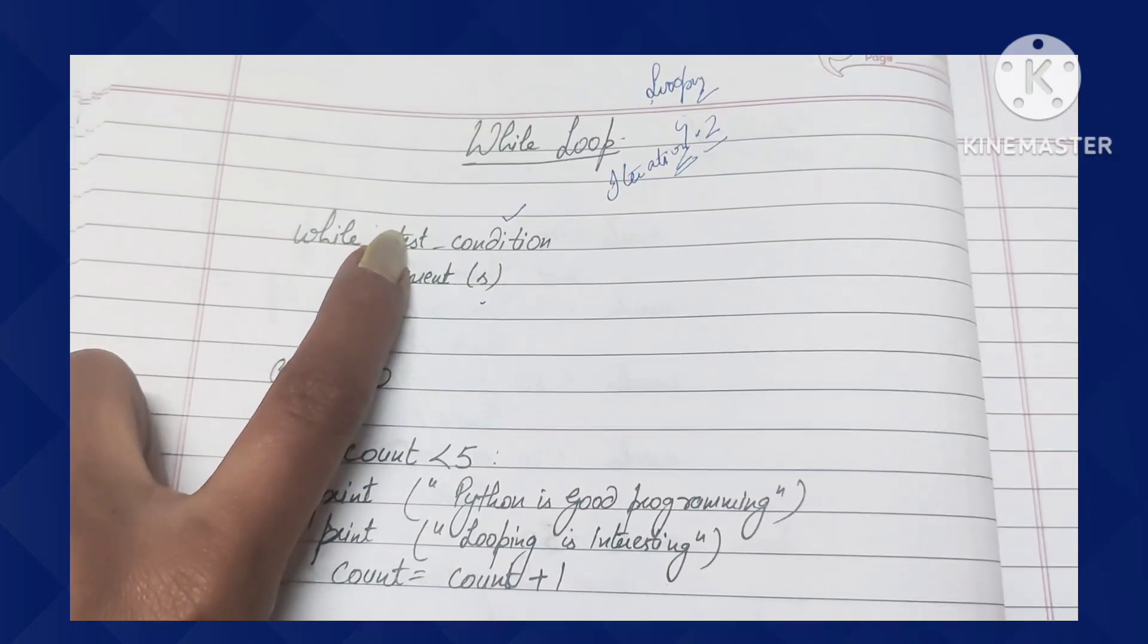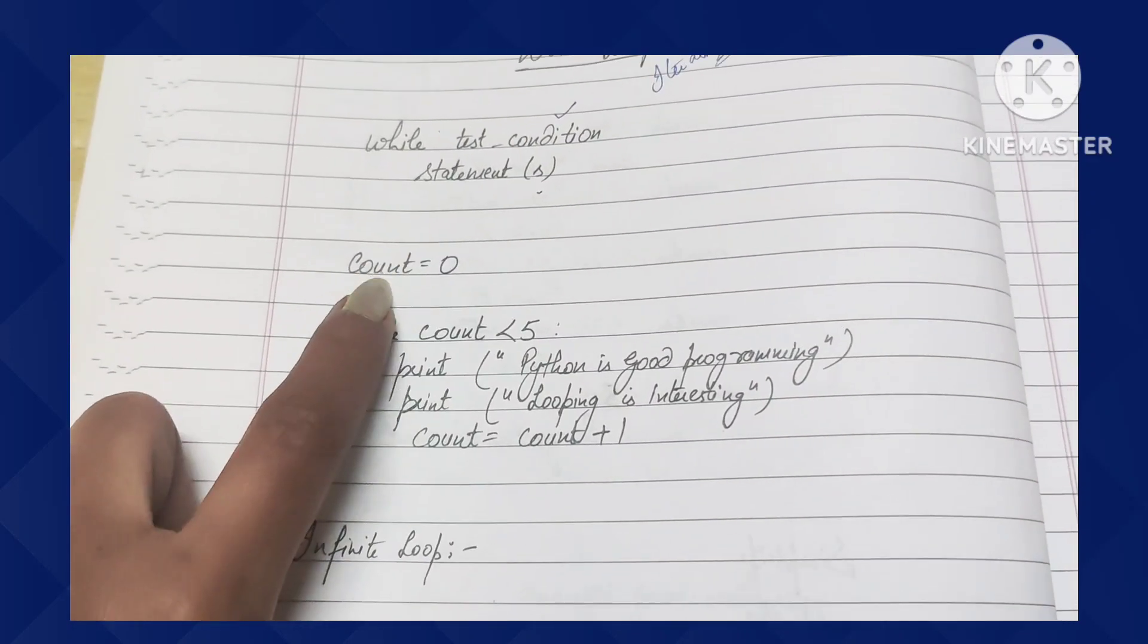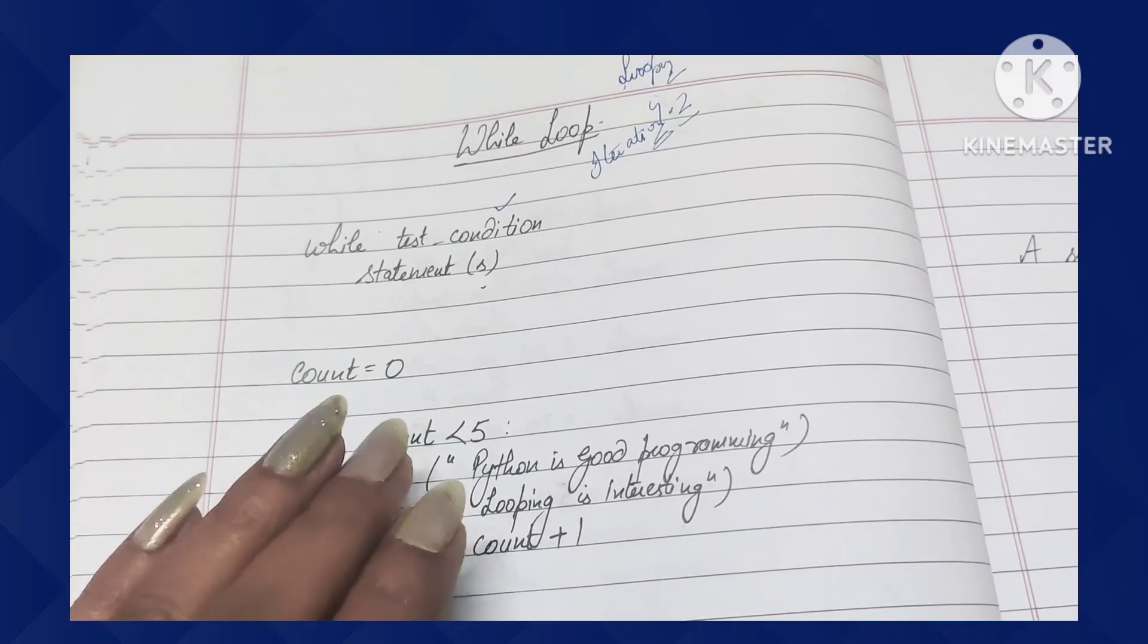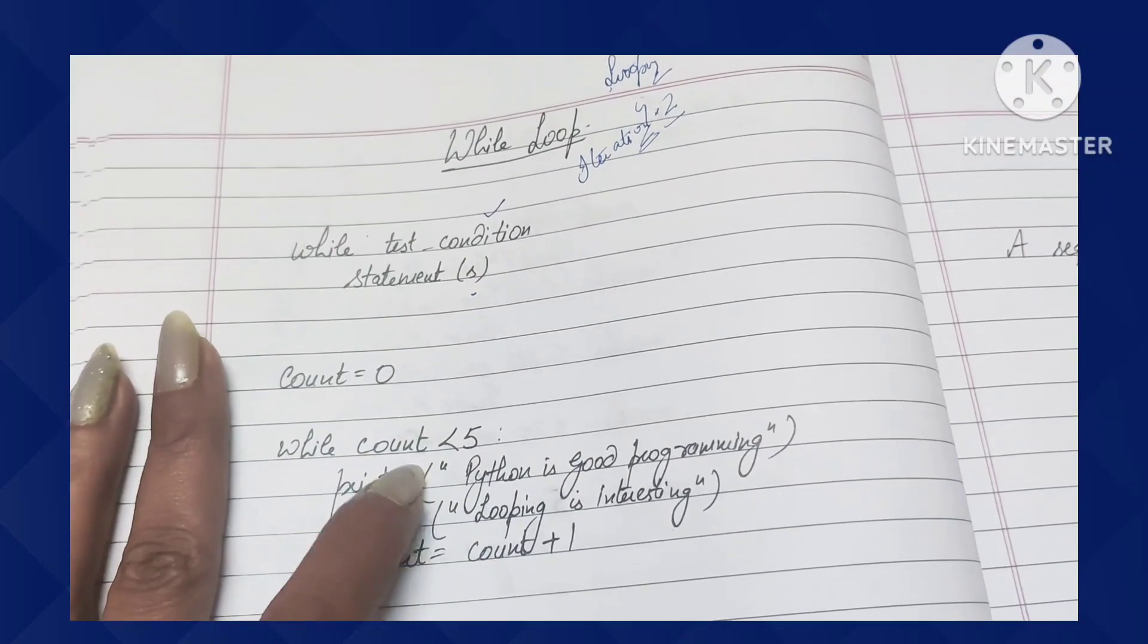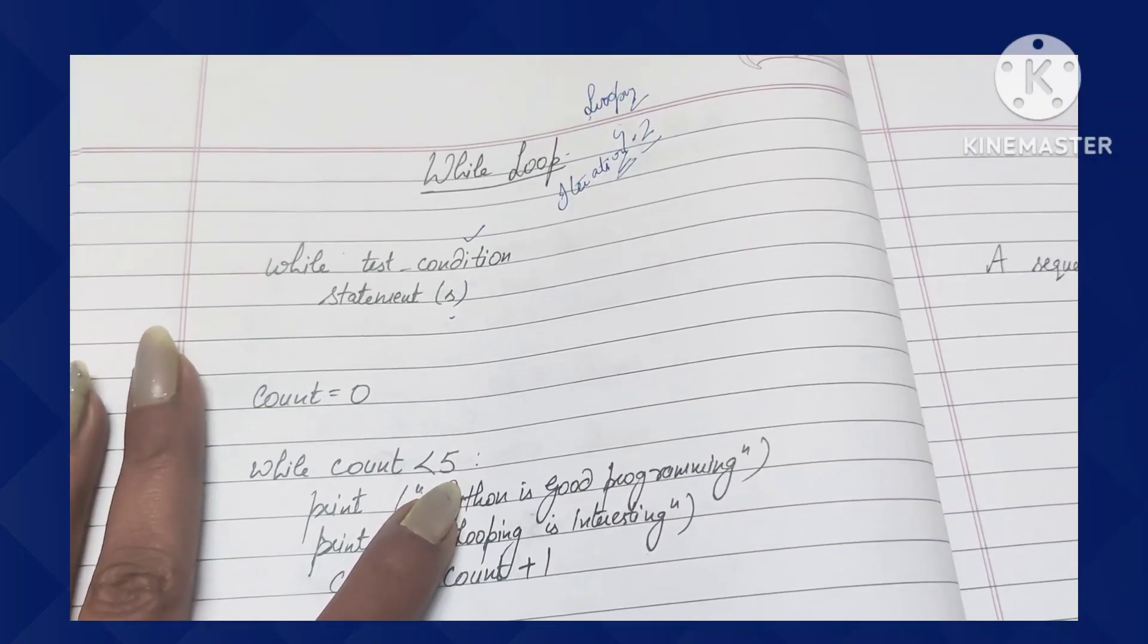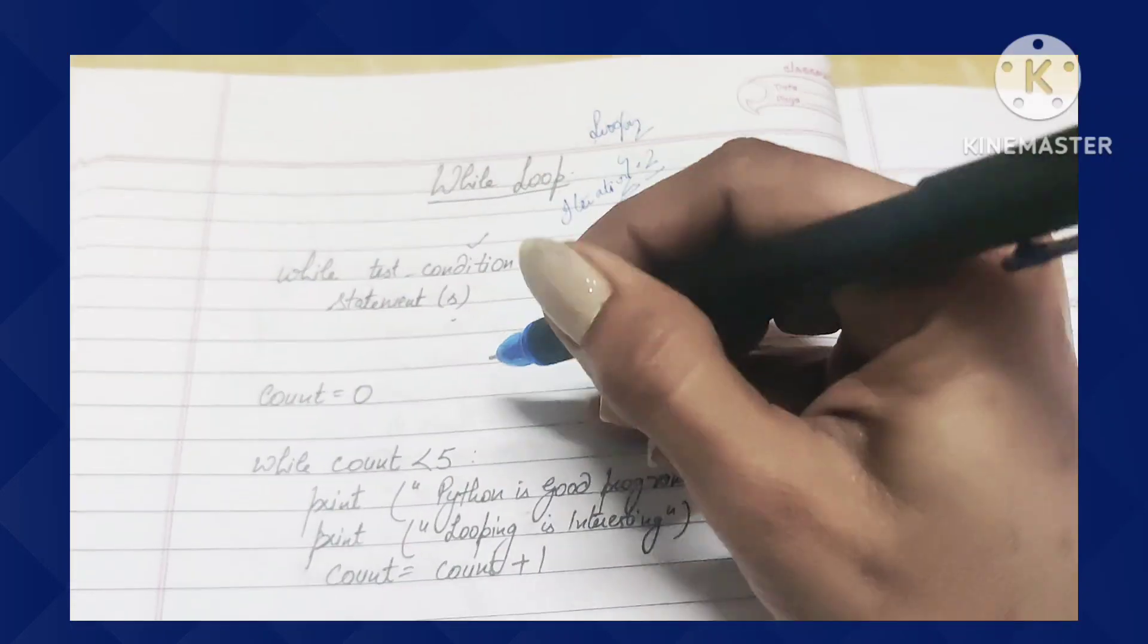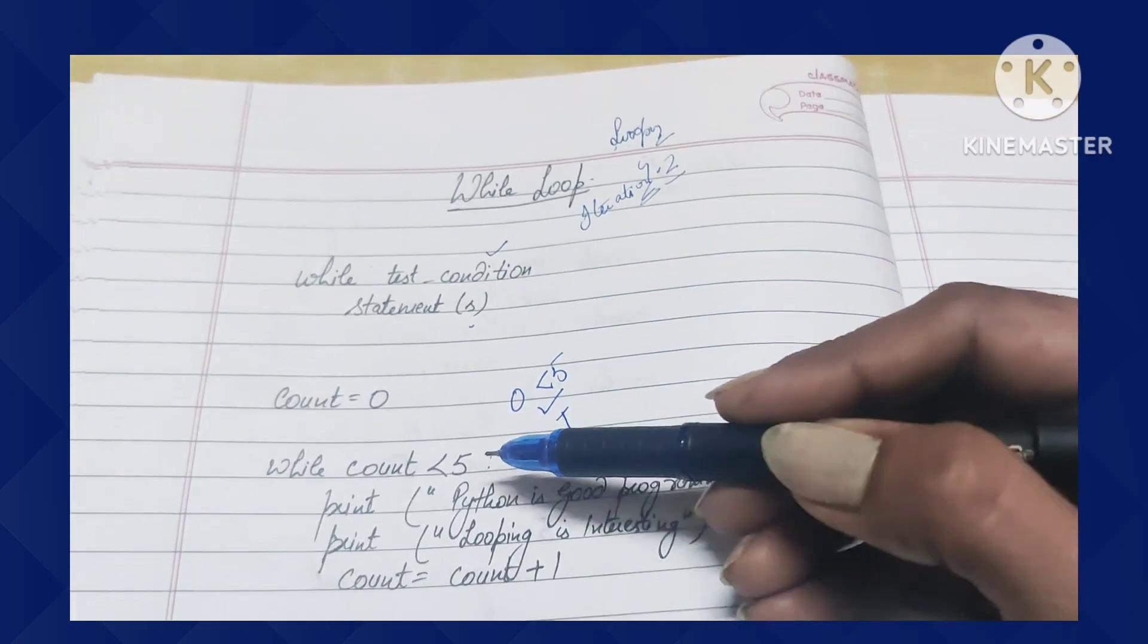Now we will see the program. First we have a variable declared - count equals 0, because we have to start with a starting point. While count is less than 5, we have to print a message and loop through. Count less than 5 - count is the variable, less than is the operator, and 5 is the total amount. If it is less than 5, the condition is true. When the condition is false, it will go out of the loop. As we enter the program, we have given the variable 0. 0 less than 5 means condition is true, and when the condition is true, control is going to continue.